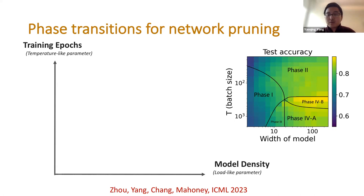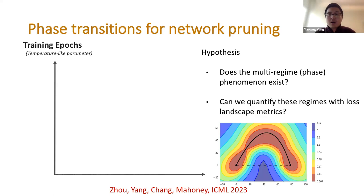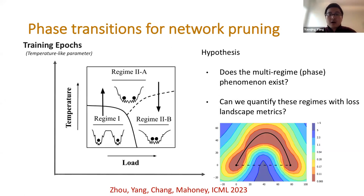For the network pruning phase plot, we use model density as the load-like parameter on the x-axis and training epochs during pre-training as the temperature-like parameter on the y-axis. We ask: can we observe multiple phase regimes for this pruning problem, and can we quantify them using loss landscape metrics like mode connectivity? It turns out that we can.